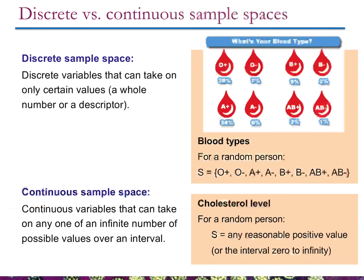Let's look at this in terms of some familiar examples. When we look at sample spaces, we can lump them into one of two broad categories: discrete sample spaces and continuous sample spaces. Discrete variables can only take on certain values — usually a whole number or a descriptor like color or sex. Continuous sample spaces can take on an infinite number of values.